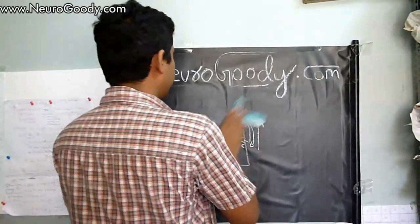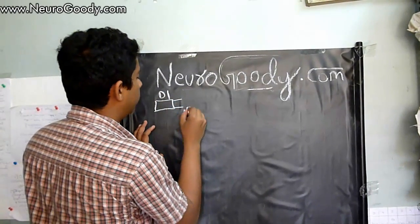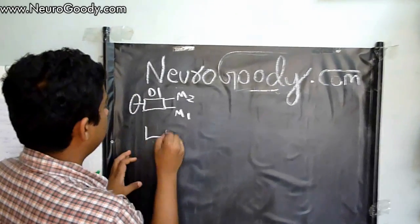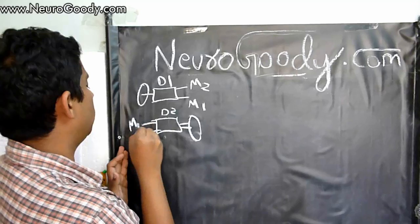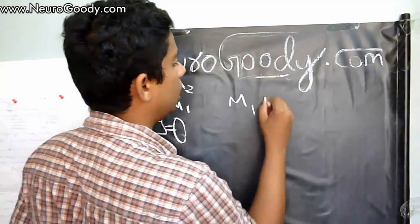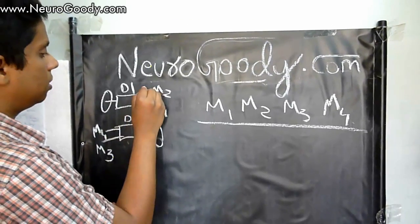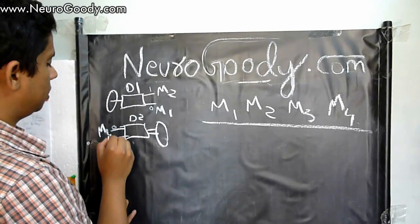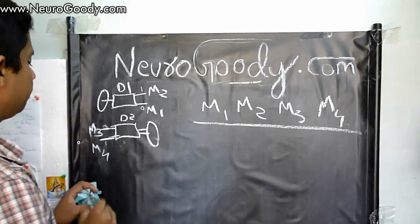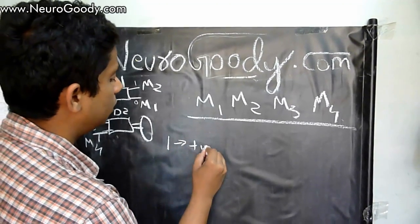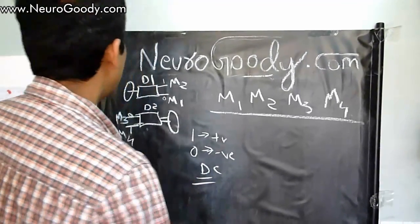DC motor D1 has outputs M1 and M2, and DC motor D2 has outputs M3 and M4. You should know that 1 represents positive voltage and 0 represents negative voltage of DC. Let's assume if I give M1=1 and M2=0, D1 turns in the forward direction, and if I give M3=0 and M4=1, D2 turns in the forward direction.